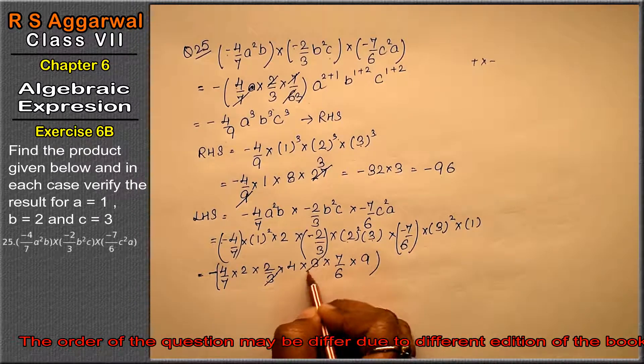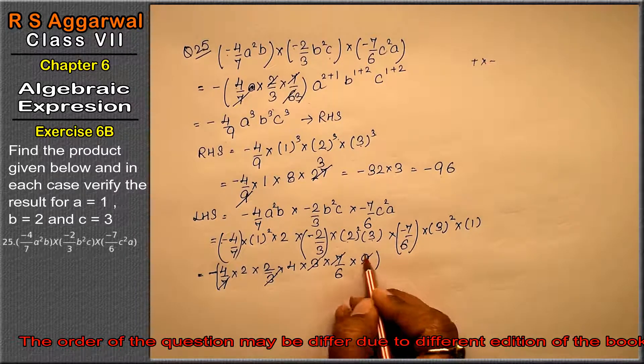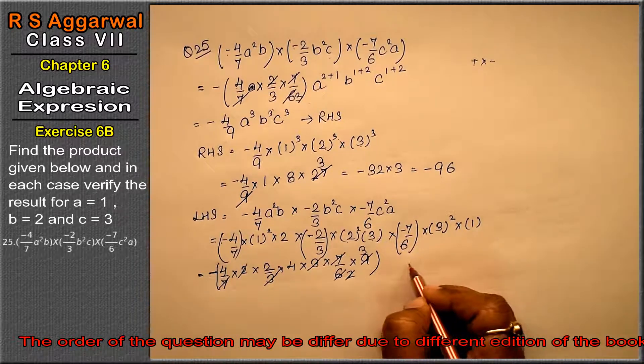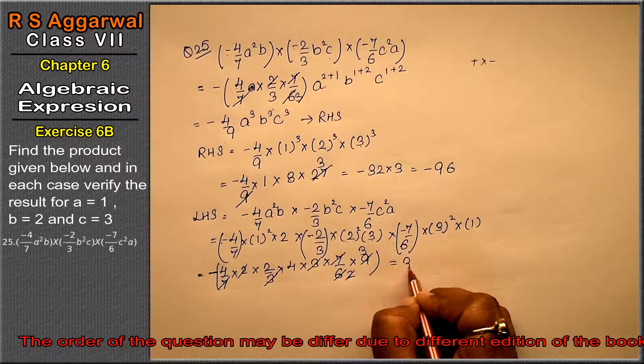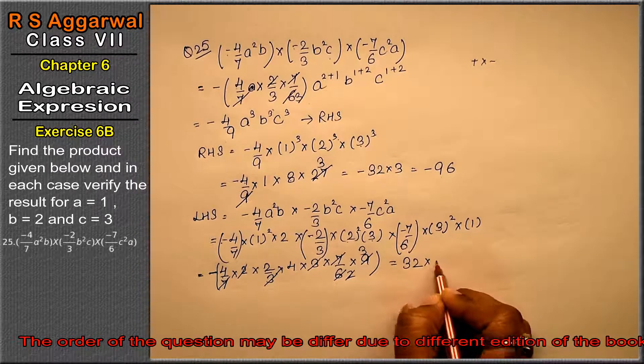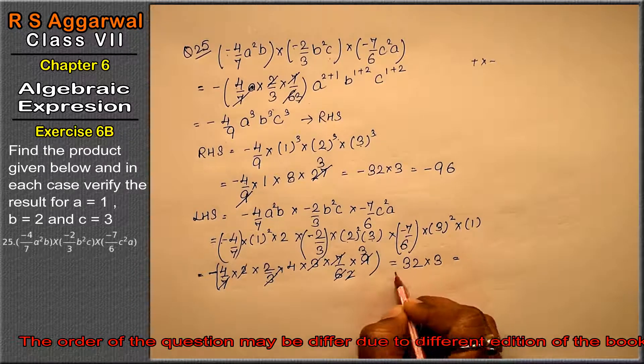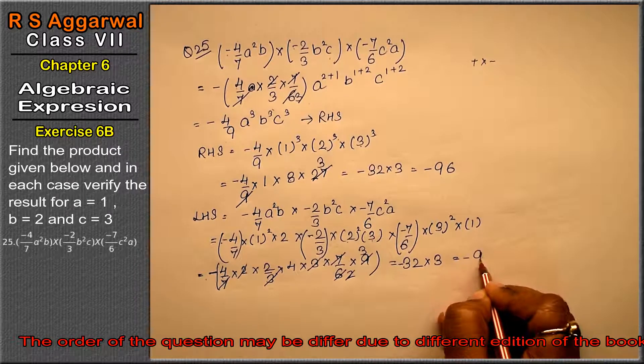Now 3 and 3 cancel, 7 and 7 cancel. Now 3 times 3 is 9, 3 times 2 is 6. And this 2 cancels with 6. So now this becomes 4 times 2 is 8, 8 times 4 is 32, times 2 into 3. So this becomes minus, minus 96. That means left hand side equals right hand side answer.